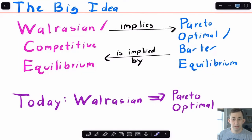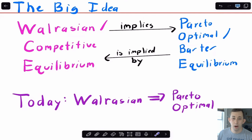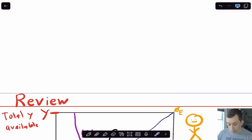So that's what we're going to talk about. The big idea behind this video and the next couple videos on the Edgeworth box is the relationship between a competitive equilibrium and a barter equilibrium. Another word for barter equilibrium is just Pareto optimal outcome, and we're thinking about when one implies the other. Specifically, we're going to talk about when a competitive equilibrium or Walrasian equilibrium implies Pareto optimality.